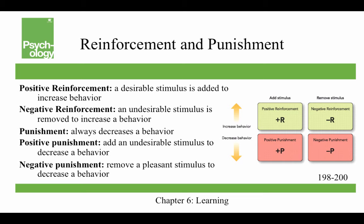Negative reinforcement is when an undesirable stimulus is removed to increase a behavior. So you have beeping on your dashboard until you put on your seatbelt — you want to increase the behavior of strapping in, so you have an undesirable stimulus, the beeping, until you put on your seatbelt. Punishment always decreases the behavior, and you can have positive and negative punishment. Positive punishment is when you add an undesirable stimulus to decrease the behavior — for example, if I wanted to decrease texting in class, I could yell at students.